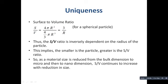After simplification, we get the result 3/r. That means the ratio of surface area to volume for a spherical particle is simply 3 divided by r. Thus, the surface-to-volume ratio is inversely dependent on the radius of the particle. This implies that the smaller the particle, the greater the surface-to-volume ratio. As material size is reduced from bulk to micro to nano dimensions, the surface-to-volume ratio continues to increase.